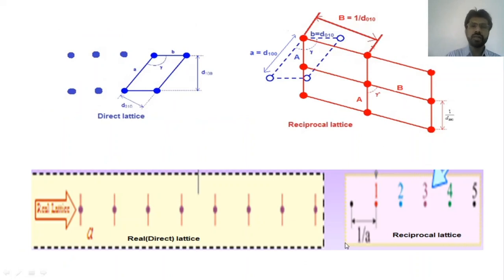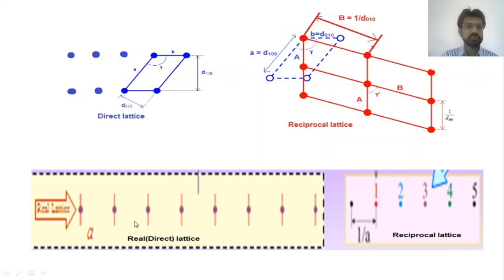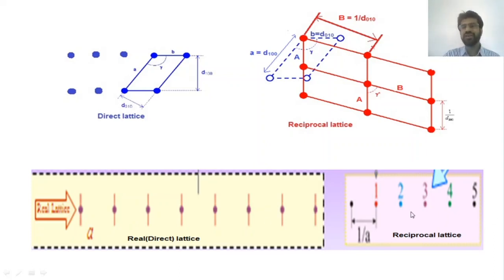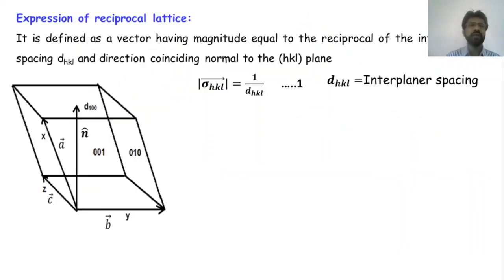Remember that the magnitude of the reciprocal lattice vector is the reciprocal of the interplanar distance. The reciprocal space lattice is a set of geometrical points constructed such that the direction of a vector from one point to another coincides with the direction of the normal to the real space planes, and the separation of those points is equal to the reciprocal of the real interplanar distance.